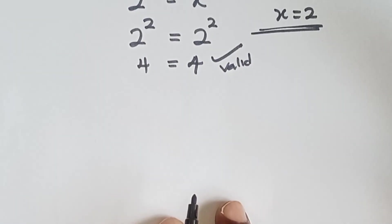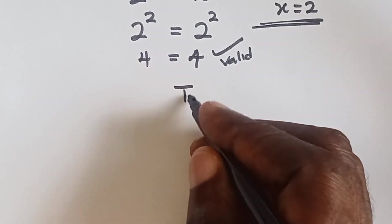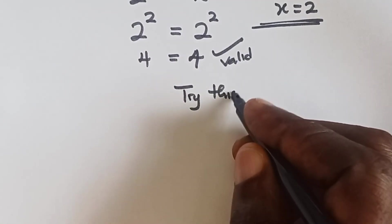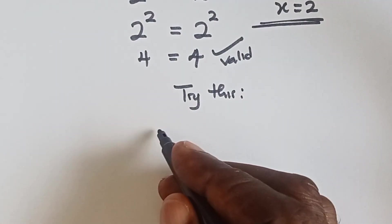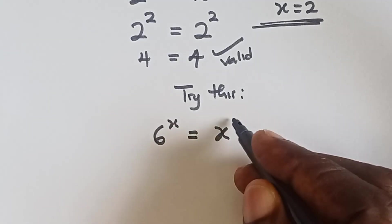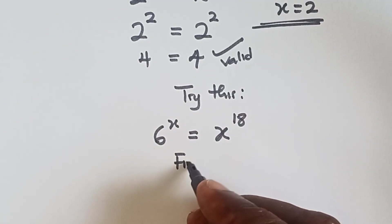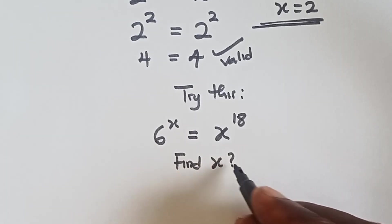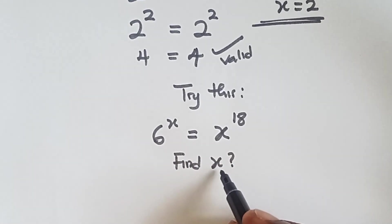Now, let's try something similar to this. We have 6 raised to power x equals to x raised to power 18. Alright, so let's find x. Now let's use algebra manipulations. No Lambert W function. No logarithm. Alright, so let's do that and write our answer under the comment section.